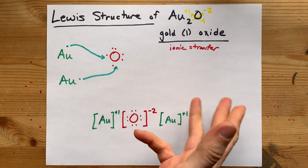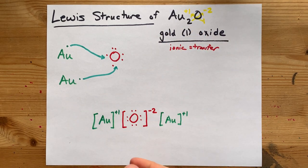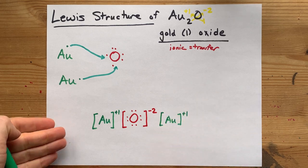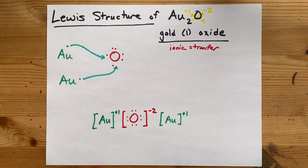There you go, your complete Lewis structure for gold(I) oxide. It's a beautiful thing, just like you are, my friends. Best of luck.